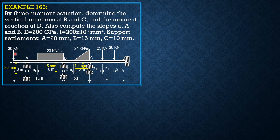Moment at A is negative 30 times 3, so negative 90. We take a strip here, and another strip. This is 20 dx. Calling this distance x, the distance 6 minus x equals 2. The height of this loading relative to x equals 24 as to 3, so the height is 8x. The differential force is 8x dx.